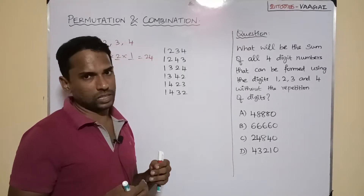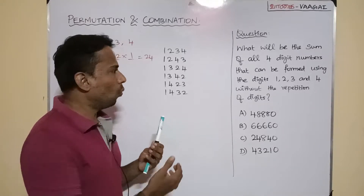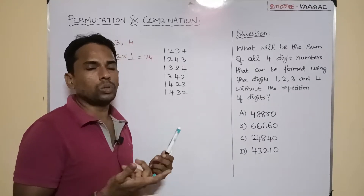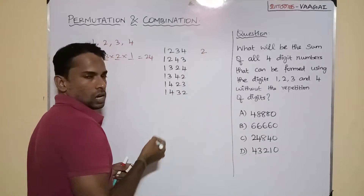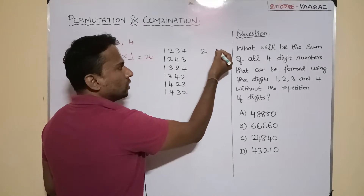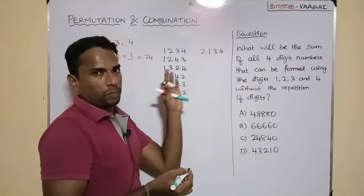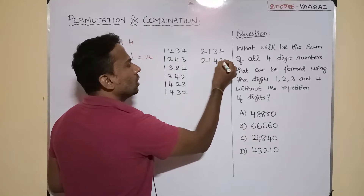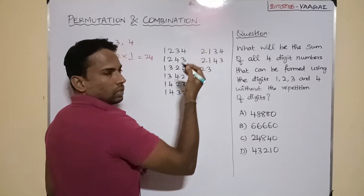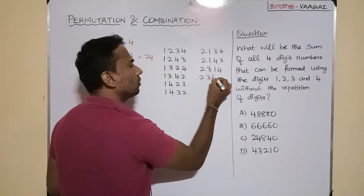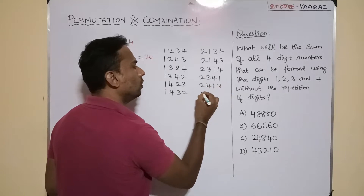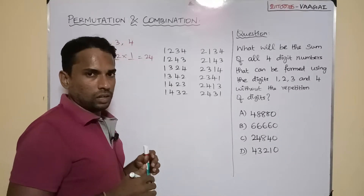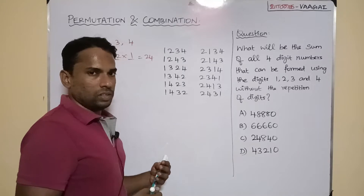Now the next six numbers will start with 2. Starting with 2, the other three digits are 1, 3, 4. In ascending order: 2134, 2143, 2314, 2341, 2413, 2431. Those are the six numbers that start with 2.